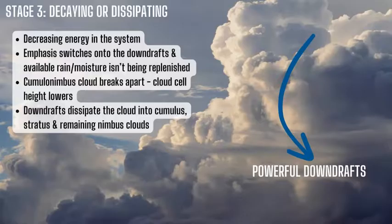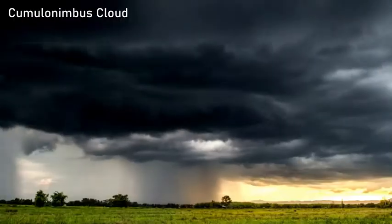The cloud could reform later on into another cumulonimbus if conditions return to stage one, but if that doesn't happen, then the storm is over and the system moves on — perhaps into an occluded front or a stationary front.